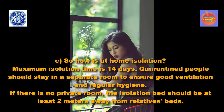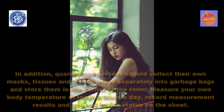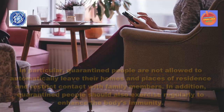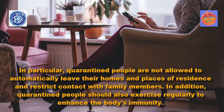The maximum isolation time is 14 days. Quarantined people should stay in a separate room to ensure good ventilation and regular hygiene. If there is no private room, the isolation bed should be at least 2 meters away from relatives' beds. Quarantined persons should collect their own masks, tissues, and mouth wipes separately into garbage bags and store them in the corner of the room. Measure your own body temperature at least 2 times a day and record measurement results and general health status. Quarantined people are not allowed to automatically leave their homes and should restrict contact with family members.